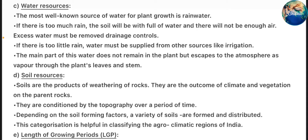Water Resources: The most well-known source of water for plant growth is rainwater. If there is too much rain, the soil will be full of water and there will not be enough air — excess water must be removed with drainage controls. If there is too little rain, water must be supplied from other sources like irrigation. The main part of this water does not remain in the plant but escapes to the atmosphere as vapor through the plant leaves and stem.